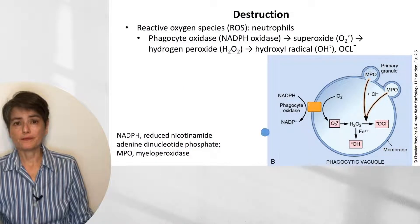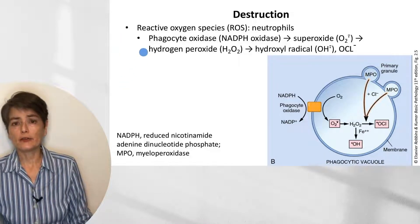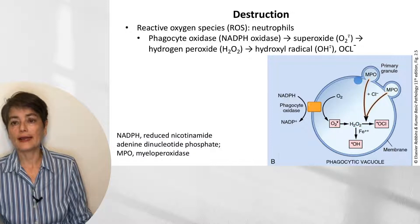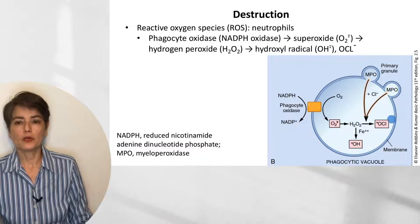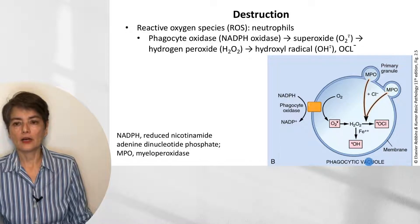In neutrophils, destruction is achieved through reactive oxygen species generated by phagocyte oxidase (NADPH oxidase). This enzyme oxidizes NADPH, giving an electron to O2 to yield superoxide, which can be transformed to hydrogen peroxide. Myeloperoxidase plus a halide ion such as chloride can yield hypochlorite — the active ingredient in bleach — which is very effective against microbes. H2O2 can also, with iron, undergo the Fenton reaction to yield the hydroxyl radical. All of these are effective at destruction.